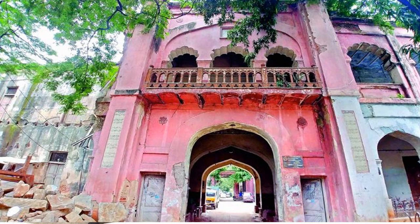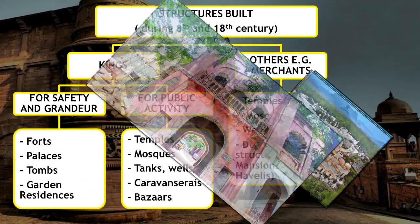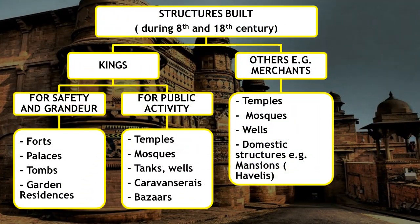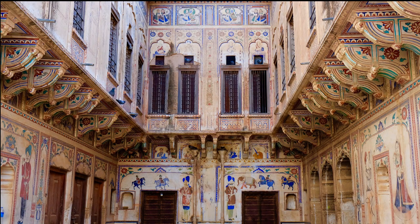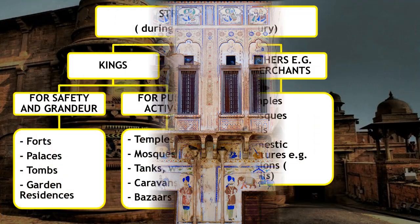This is a picture of Nampalli Sarai in Hyderabad, India. These are the remains of the building. Merchants also got some buildings constructed, for example temples, moths, wells, and mansions or Havelis.